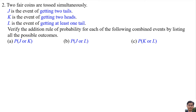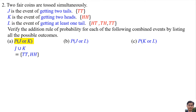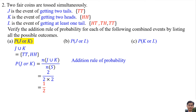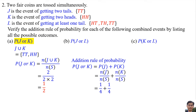Number 2: Two fair coins are tossed simultaneously. J is the event of getting 2 tails, so the element is {TT}. K is the event of getting 2 heads, so the element is {HH}. L is the event of getting at least 1 tail, so the elements are {HT, TH, TT}. For part A, the probability of J or K: J ∪ K has elements {TT, HH}, so P(J or K) = 2/4 = 1/2. Using the addition rule, the probability is also 1/2, so the addition rule is verified.